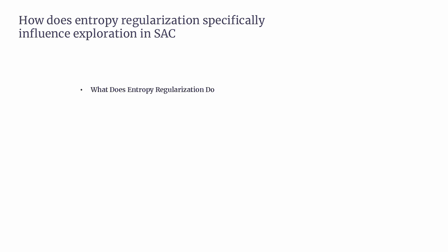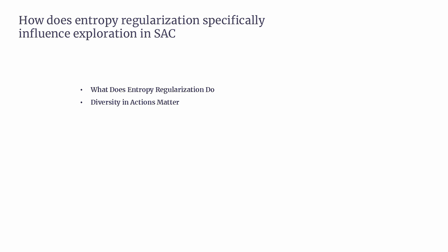The goal of SAC isn't just to maximize rewards — it also aims to maximize the entropy of the policy. Entropy measures the randomness in action choices. In the objective function, Q(S,A) measures how good an action is in a given state, and the entropy term negative alpha times pi encourages the policy to maintain diversity in its action choices. By maximizing this entropy, the agent explores more and avoids getting stuck in a narrow range of actions too early. When entropy is high, the policy is uncertain about which action to take, and as a result, it samples from a wide range of possibilities. This diversity is essential for discovering better strategies and avoiding premature convergence on suboptimal actions.